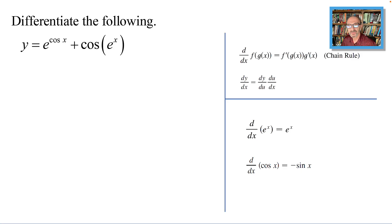y equals e to the cosine x plus cosine e to the x. We will be using the chain rule. So if you have a function of a function, you differentiate f first, which is f prime of g of x, then you reach inside, and that's why it's called the chain rule, and you find g prime of x.